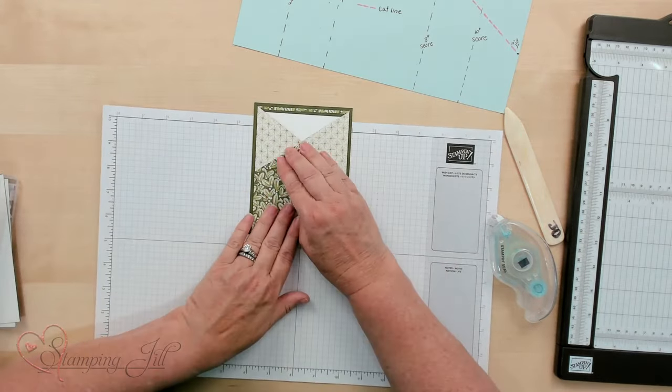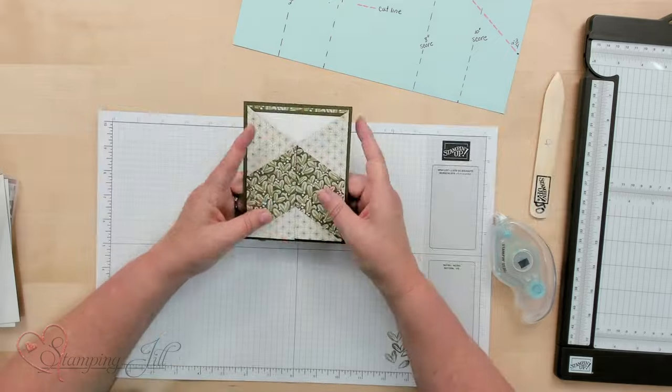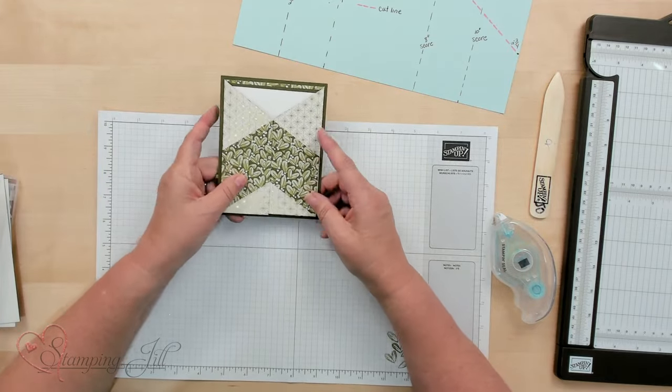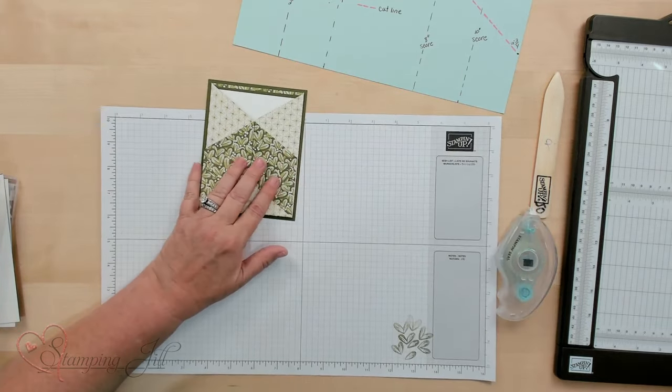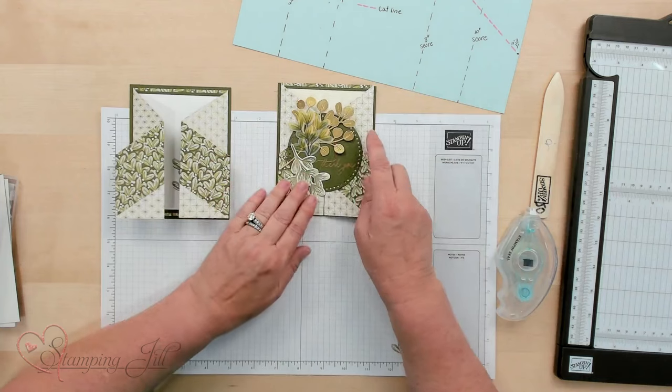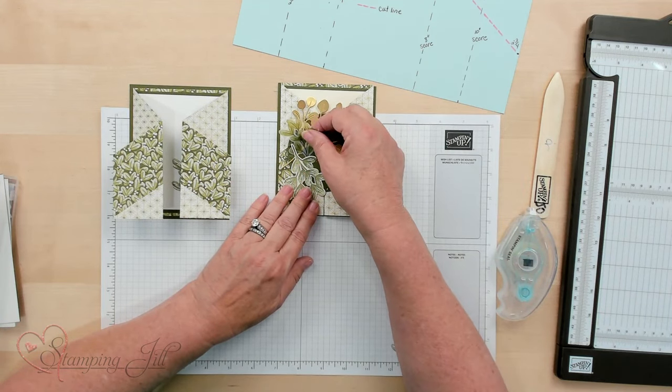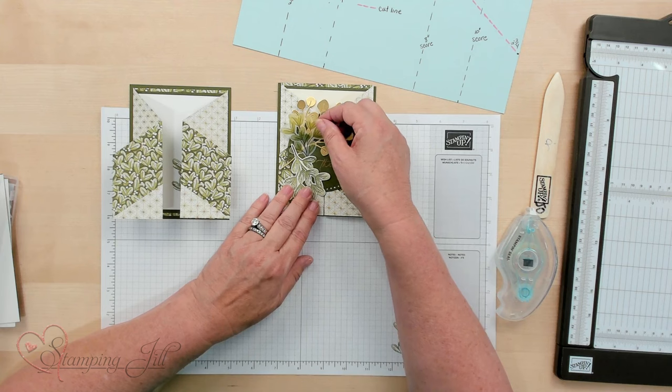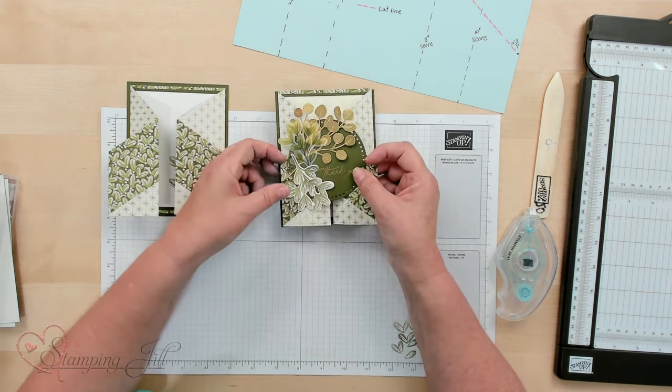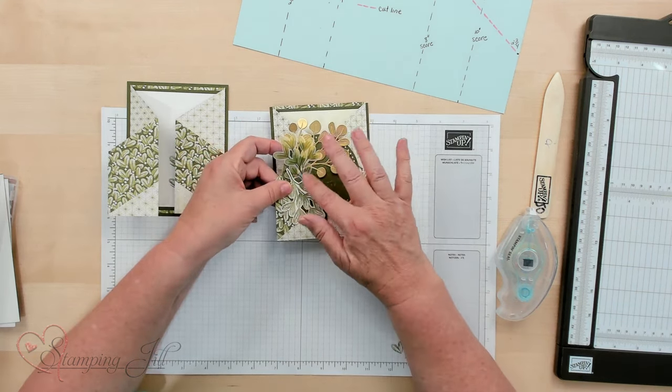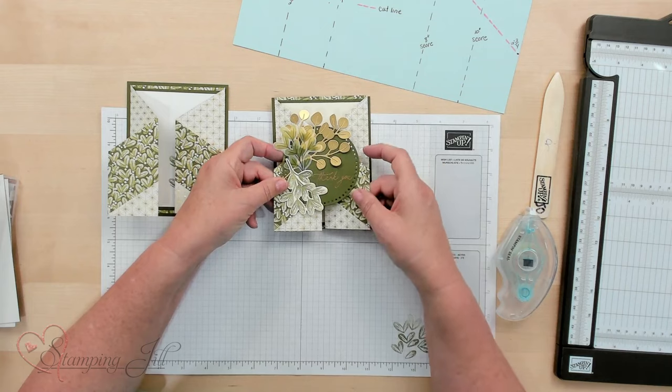I love it already. Now your focal point goes right here. Now you can add some embellishments to this gate card fold. Let me show you what I did with this. I went ahead and used some foil. I love this Graceful Greenery vellum that also comes with the suite because it already has these printed on it. So all you have to do is cut them out.